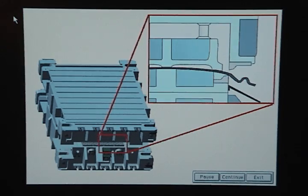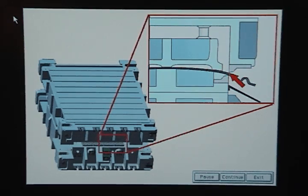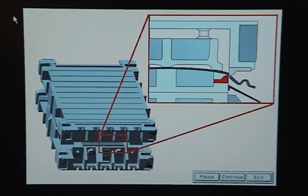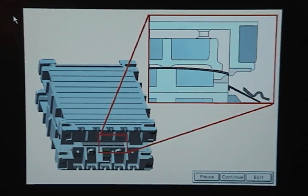When a trim die closes, a spring or nitrogen-loaded pad holds the part in position. Then the upper trim steels contact the part, and as they pass by the lower trim steels, they shear the metal.